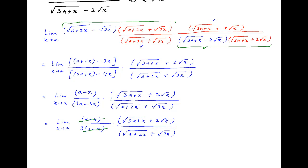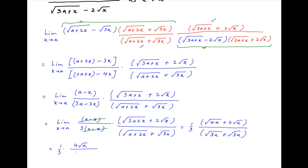Putting x equal to a, the value of this limit is equal to 1 upon 3 times root 4a plus 2 root a, divided by root 3a plus root 3a. This is equal to 1 upon 3 times 4 root a divided by 2 times root 3a. Root a cancels across the numerator and denominator, and this whole expression simplifies to 2 upon 3 root 3.